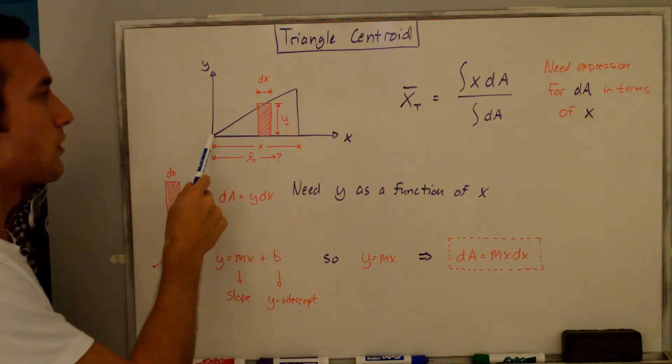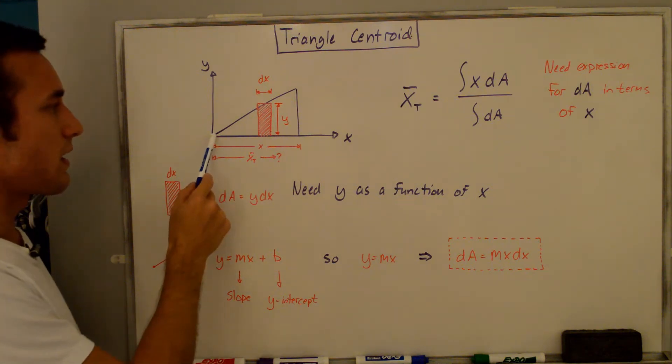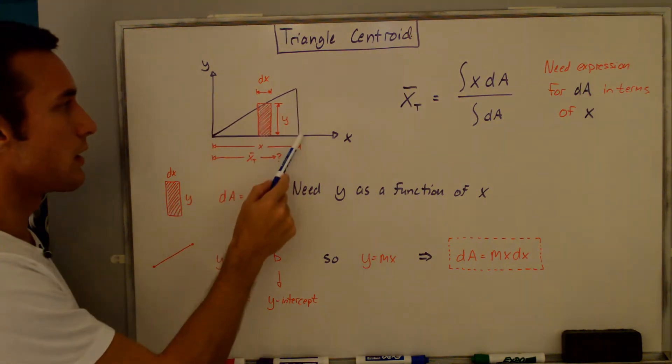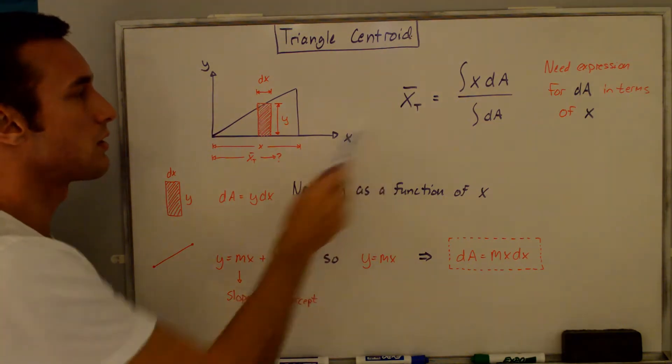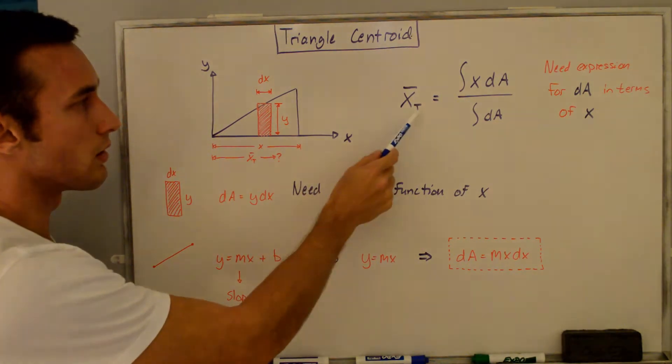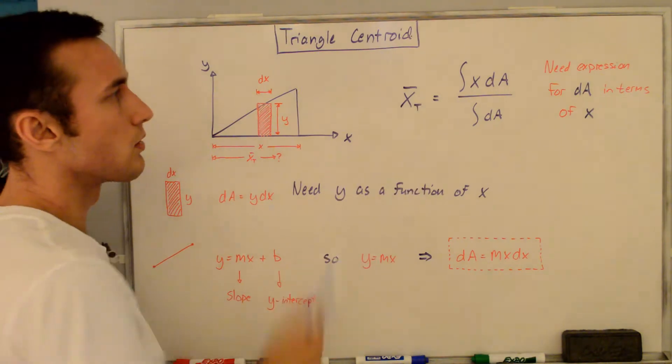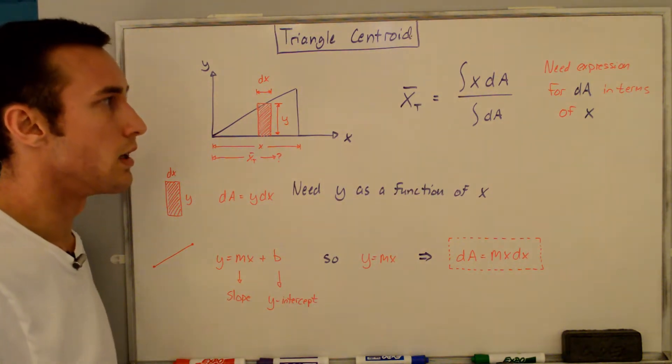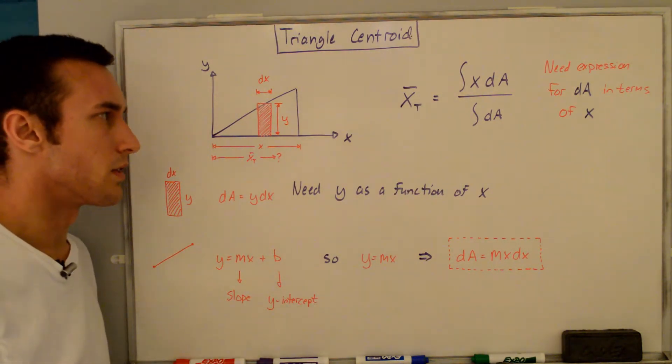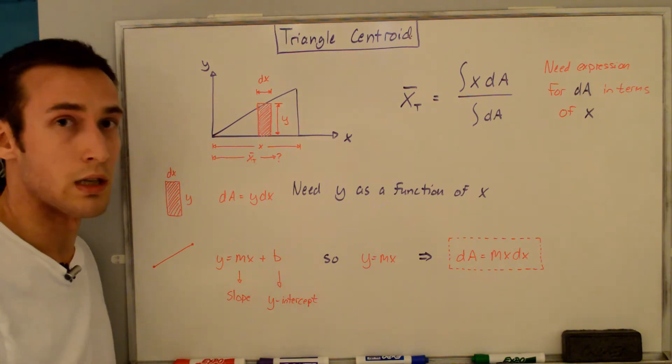You can see here we have this triangle in the xy coordinate plane with its vertex at the origin. To find the x-position of the centroid, denoted as x̄_t (t for triangle), equals the integral of x dA over the integral of dA. The derivation of this is left for another video, or you can find resources online.